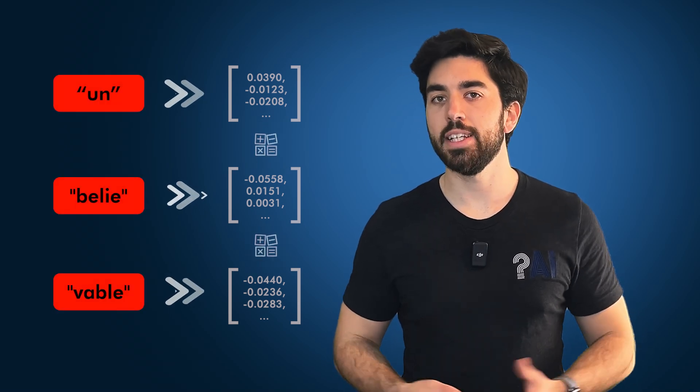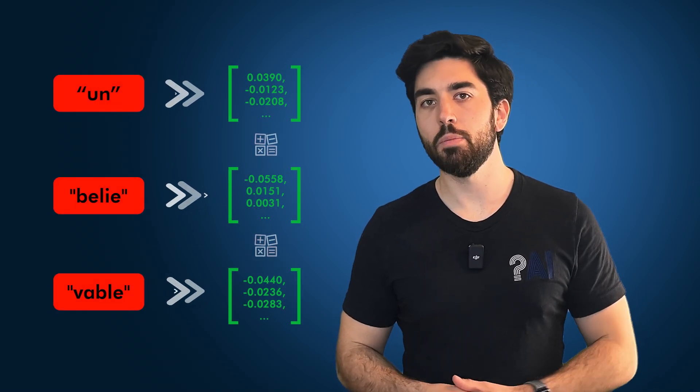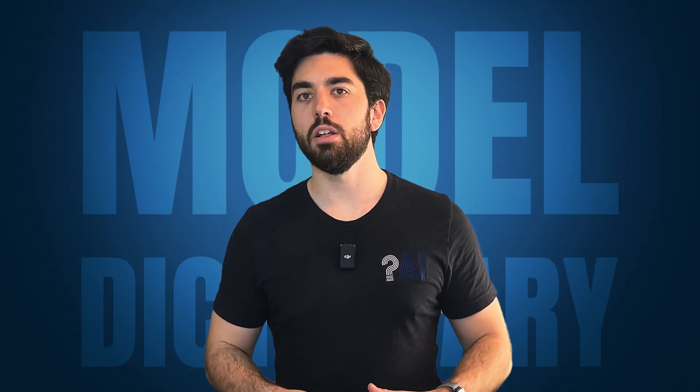But we still have words, and models don't know words. We need to transform them into numbers so that the model can do math operations on them, as it has no clue what a word is. It only knows about bits and numbers. Here, we use what we call a model dictionary.